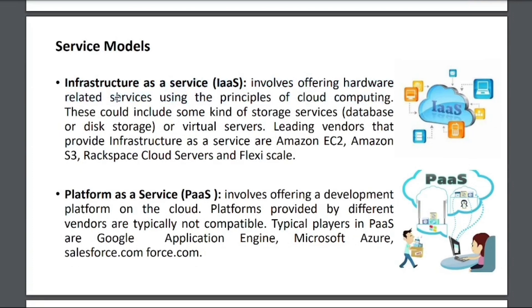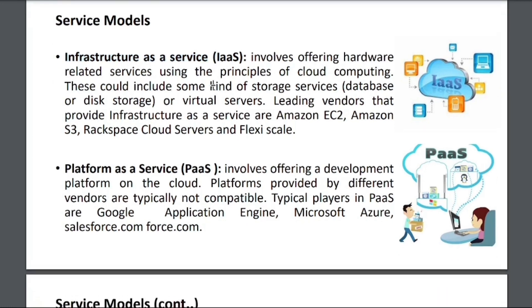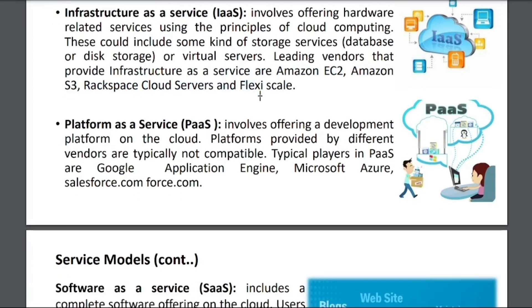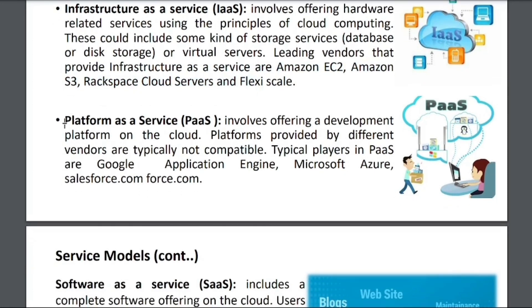Infrastructure as a Service — as the name justifies — provides everything over the internet, such as hardware offerings and infrastructure like virtual servers, databases, and storage. Examples include Amazon EC2, Amazon S3, Rackspace Cloud Server, and FlexiScale.